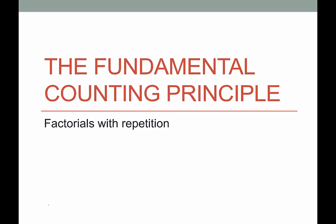Recall a factorial. If we have n factorial, that means that we multiply n by every positive integer factor that's smaller than it. So it would be n times n minus 1 times n minus 2, so on and so forth, times 3 times 2 times 1. That's what a factorial is.